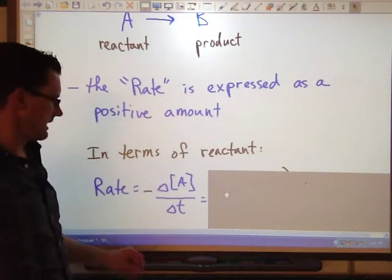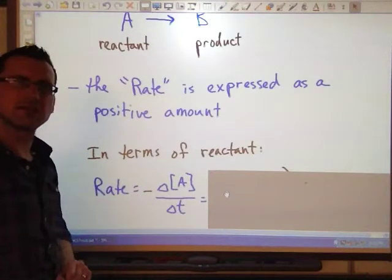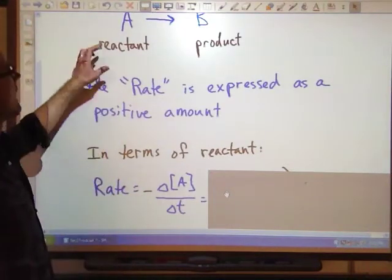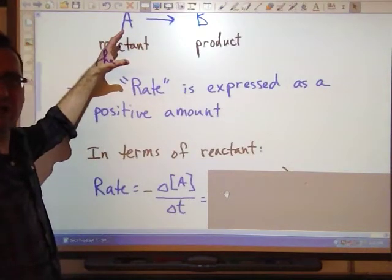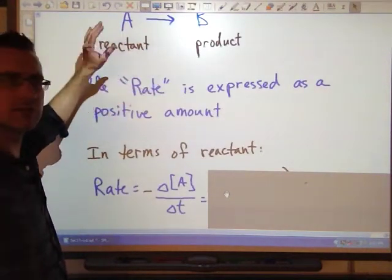Bear in mind that the Greek symbol delta means change in, the square brackets mean concentration of. And you may also notice that I have a negative in front. That's because I know that A is going to be used up. It's going to decrease in value.